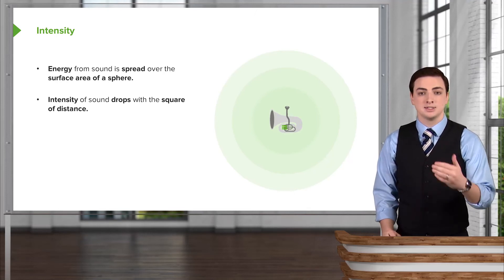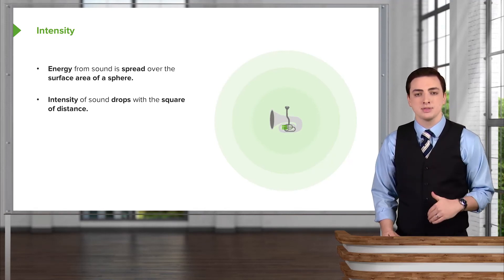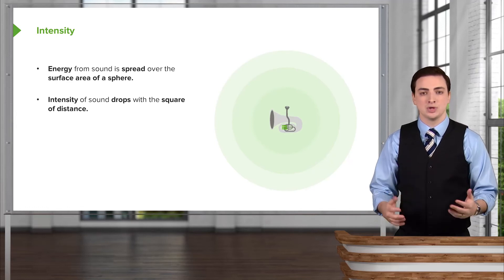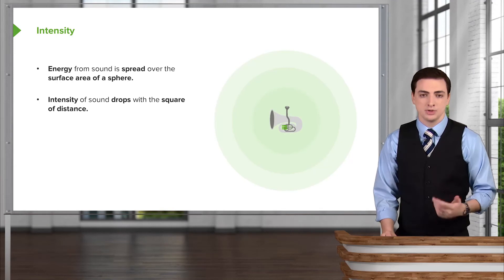For example, if you moved twice as far away from a source of sound, it would in fact sound one-fourth as loud. The intensity of the sound will drop with the square of the distance rather than with the distance directly for the reasons we just described.